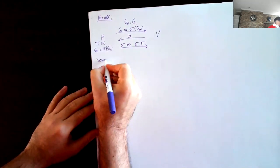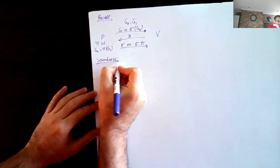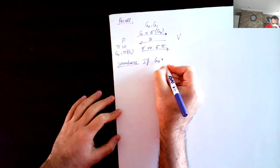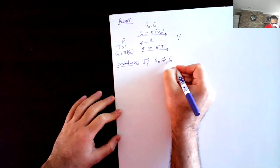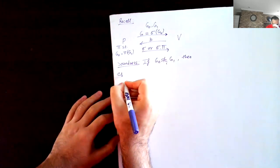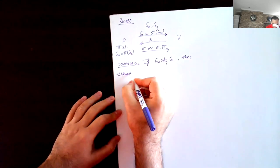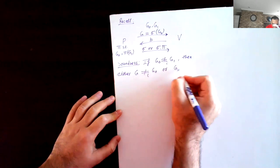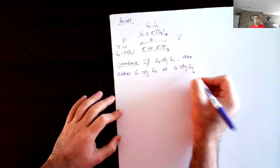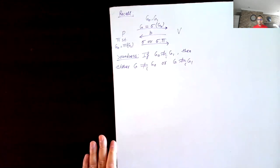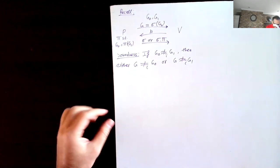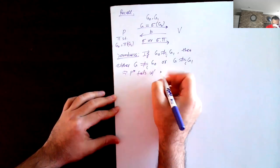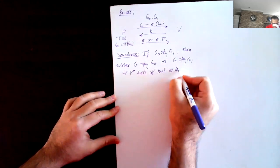How did we prove soundness? The main idea is that if G0 is not isomorphic to G1, then either G is not isomorphic to G0 or G is not isomorphic to G1. For at least one of the challenges the prover is going to fail. So the cheating prover P* fails with probability at least one-half.